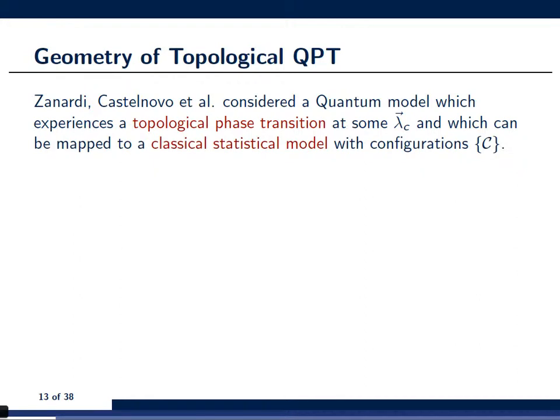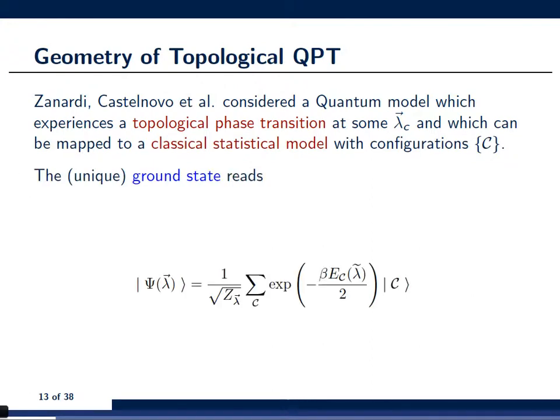Now, what Zanardi and Castelnovo considered was a quantum model that experiences a topological phase transition at some value of parameters which I call again vector lambda_c but which also has a special property that it can be mapped to a classical statistical mechanics model that has some configurations that I denote by curly C. Now, I don't want to go into the details of this model but the unique ground state of the model was of the following form.